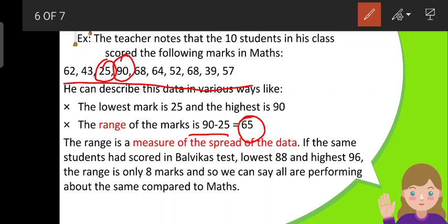The range is a measure of the spread of the data. If the same students had scored in Balvikas test - this is the math test which we have discussed. In Balvikas test, the lowest is 88 and the highest is 96. The range is 96 minus 88, which is 8 marks. Therefore, the range is very less.